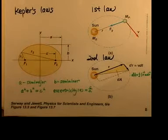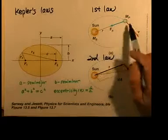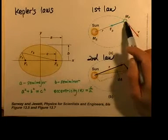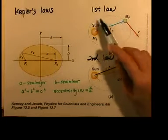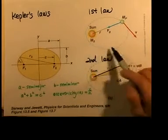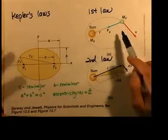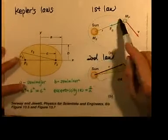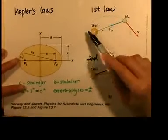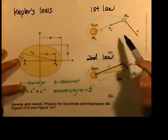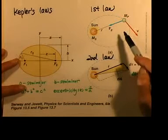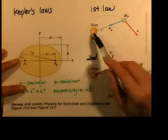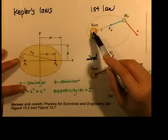Kepler's first law says that all planets move in elliptical orbits with the sun at one focus. Look at the orbit — it is elliptical, with the sun at one focus.